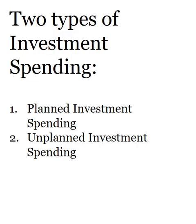So knowing what investment spending is, there are two major types: planned investment spending and unplanned investment spending. Businesses will often decide intentionally to expand — only when they consider it to be a good time financially and economically. Then there's unplanned investment spending — things like a machine breaks and they have to pay to replace it. Planned investment spending tends to go up during recoveries and decrease during recessions, whereas unplanned investment spending happens regardless of where you are in the business cycle.